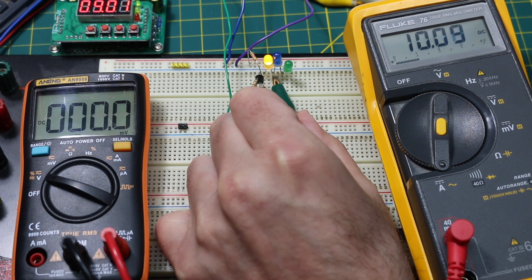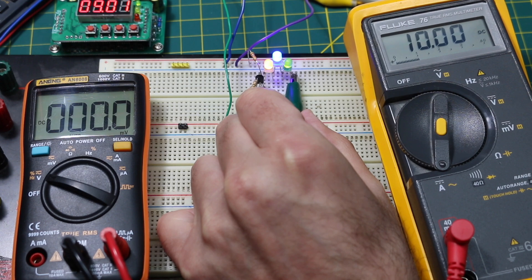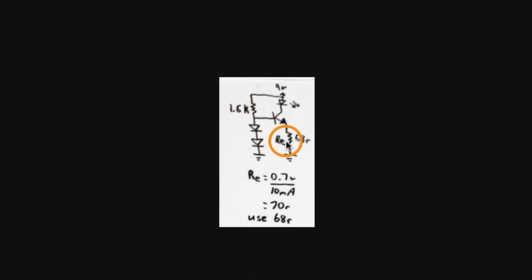If you need a constant current source or sink, and it doesn't need to be too precise, here's a couple of simple transistor circuits you can use with just a couple of parts and low cost.